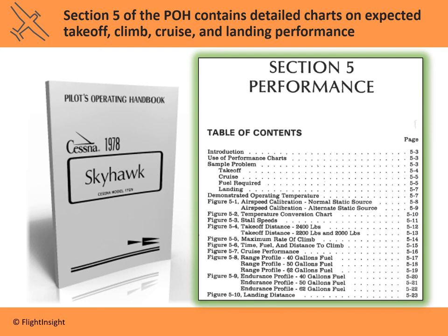Now that we understand the concepts, how do we translate them into actual numbers we can use for flight planning? This is where Section 5 — the Performance section — of the pilot's operating handbook comes in. It contains detailed charts for expected takeoff, climb, cruise, and landing performance numbers for specific conditions, so we can verify we have enough runway and estimate fuel burn and flight time.